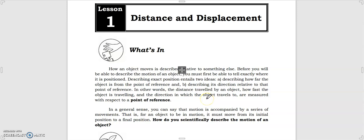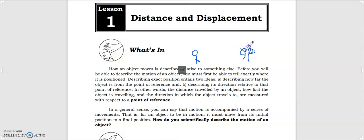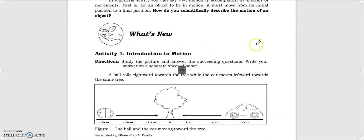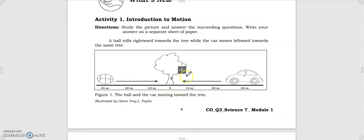A point of reference is the part that is not moving, which you use to compare the position of a moving object. For example, you have a person walking and there is a tree. The point of reference is the tree because the tree is stationary — it's not moving — whereas the person is walking. That's how we describe a point of reference as simply as we can.